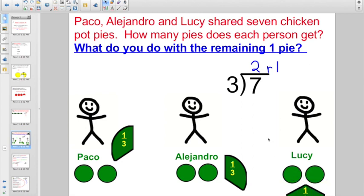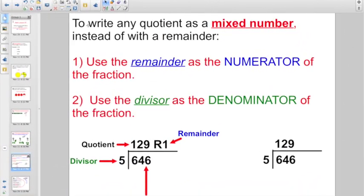Now how do we actually do that? What's the algorithm? So here it is. To write any quotient as a mixed number instead of with the remainder, use the remainder as the numerator of the fraction. Use the divisor as the denominator of the fraction.